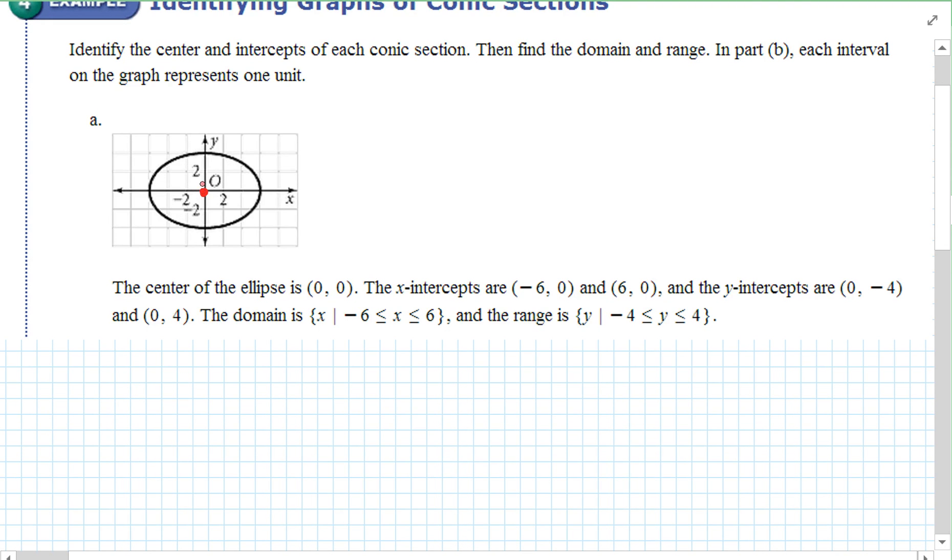Well the center is easy enough. The center is 0, 0. The x-intercepts, where does it cross the x-axis? Negative 6, 0 and 6, 0. What are the y-intercepts? 0, 4 and 0, negative 4. So the domain would be all real numbers between negative 6 and 6. And the range is all real numbers between negative 4 and 4.